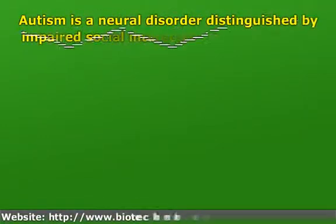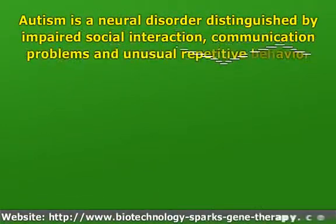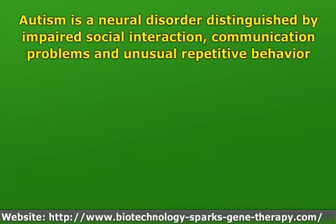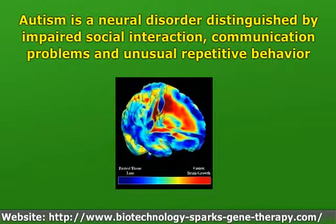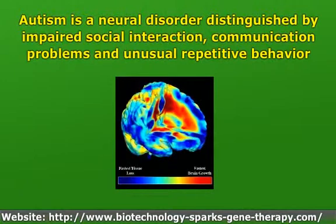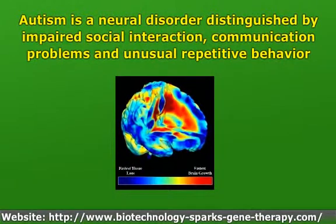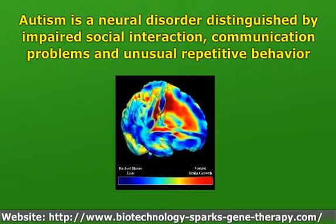Autism is a neural disorder distinguished by impaired social interaction, communication problems, and unusual repetitive behavior. The signs usually begin before the age of 3. It affects information processing and alters how nerve cells connect and organize.